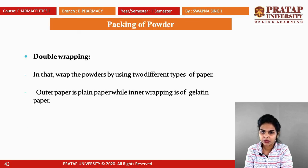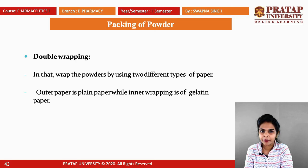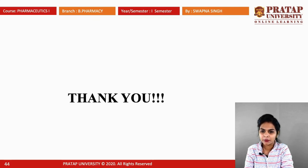For powder packing, there is one method available: double wrapping. In this method, powders are wrapped using two different types of paper — an outer plain paper and an inner gelatine paper. This is known as double wrapping. This concludes the topic of pharmaceutical powder and its manufacturing in industries.